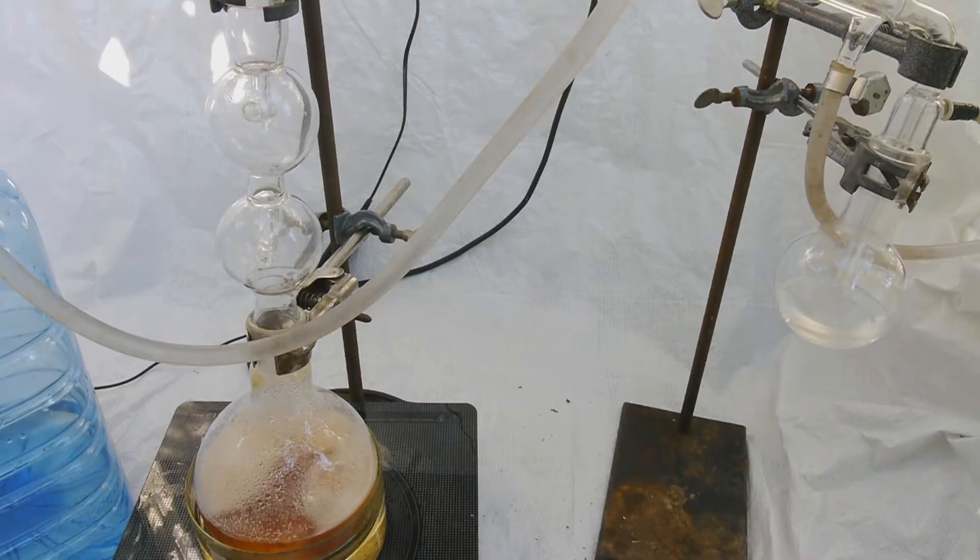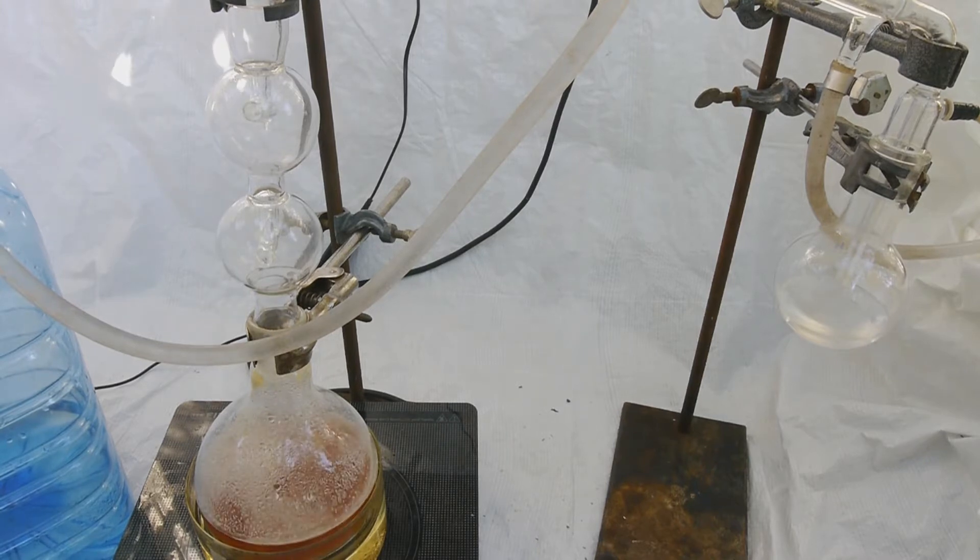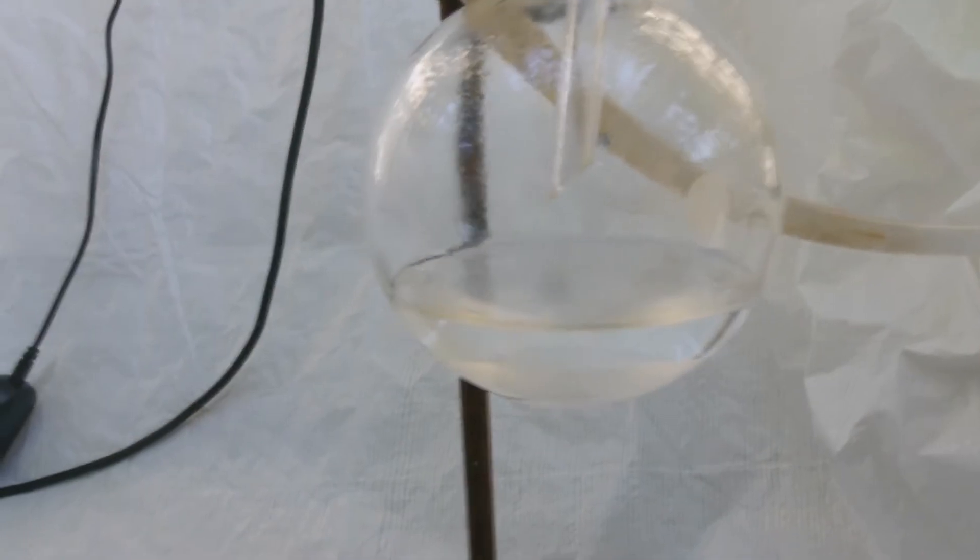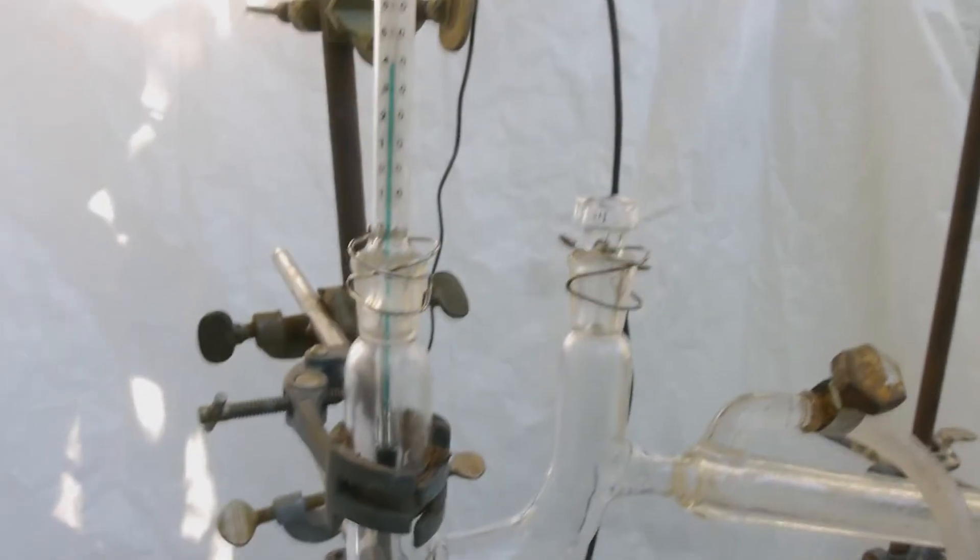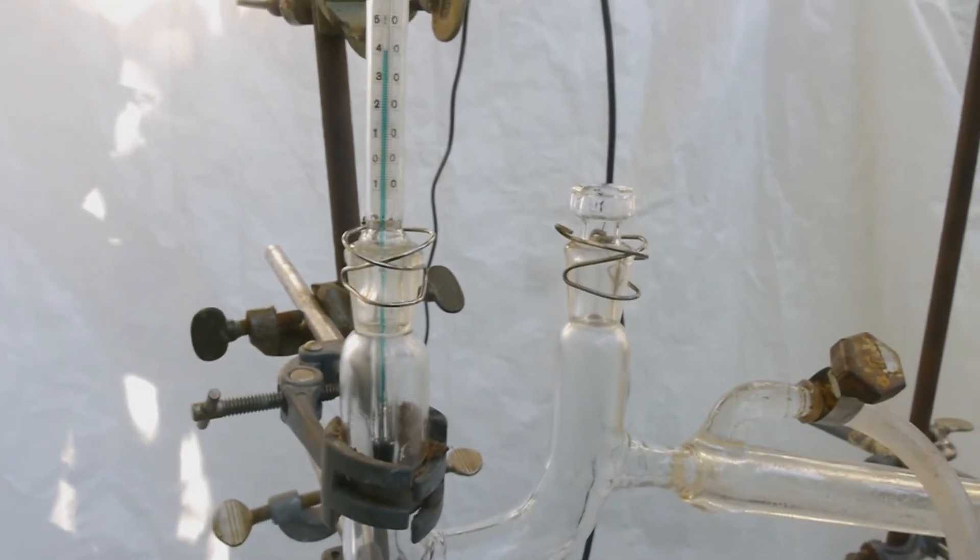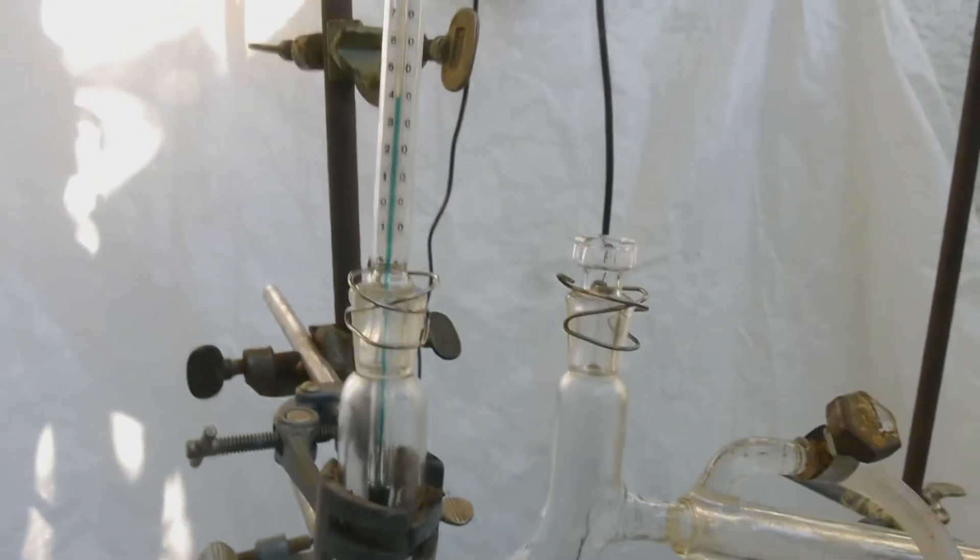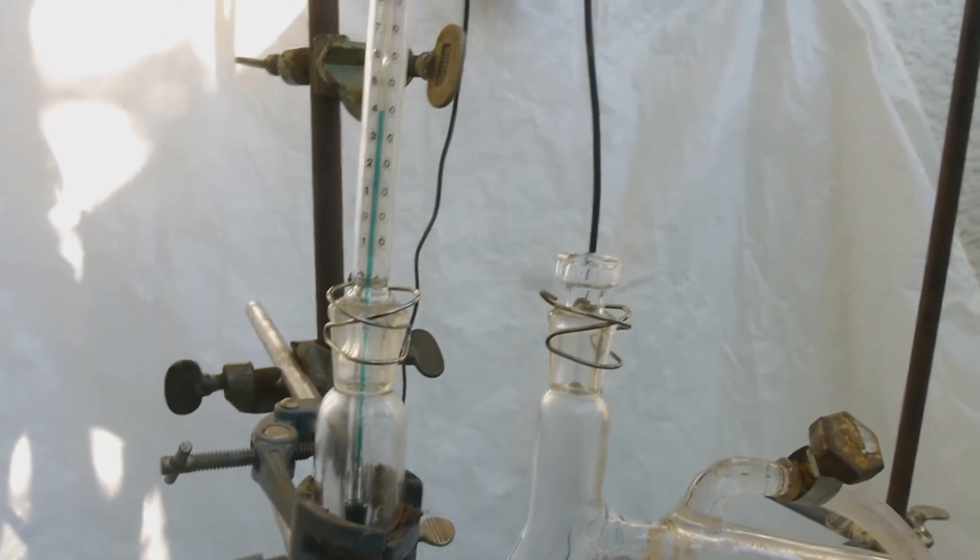Here's the reaction after like half an hour on almost the lowest heat setting. As you can see, it's going along quite nicely. Here you can see the product condensing in the condenser. And here's how much we collected so far in this 250 milliliter flask. I would guess that's like 30 milliliters, maybe 40. Also, the temperature of the thermometer reads pretty much what we would expect for ethyl bromide, plus or minus a couple degrees, but that's okay.